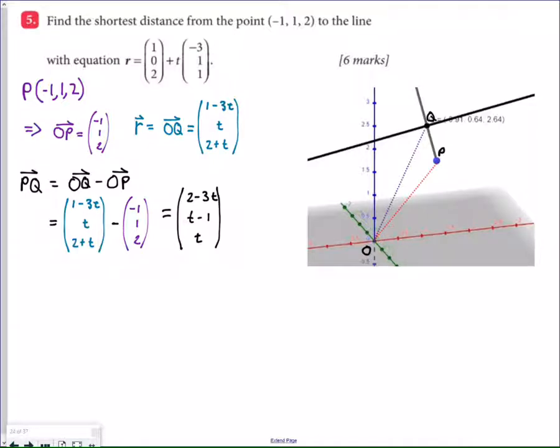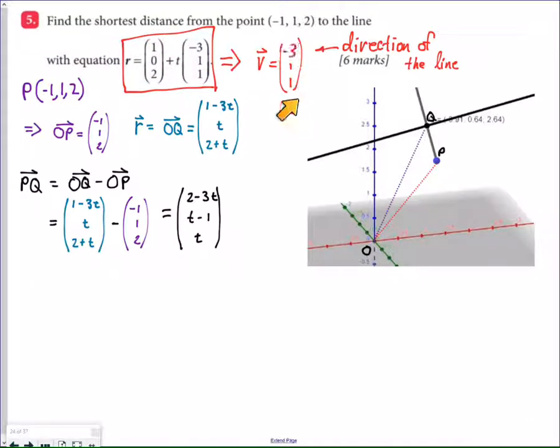In order to do that, we have to first acknowledge that the line itself contains a velocity or direction vector. This is the velocity vector, the one that's kind of like the slope. And so this vector gives me the direction of the line. And this gives me the direction of point QP, or PQ rather, I'm sorry, of line PQ.